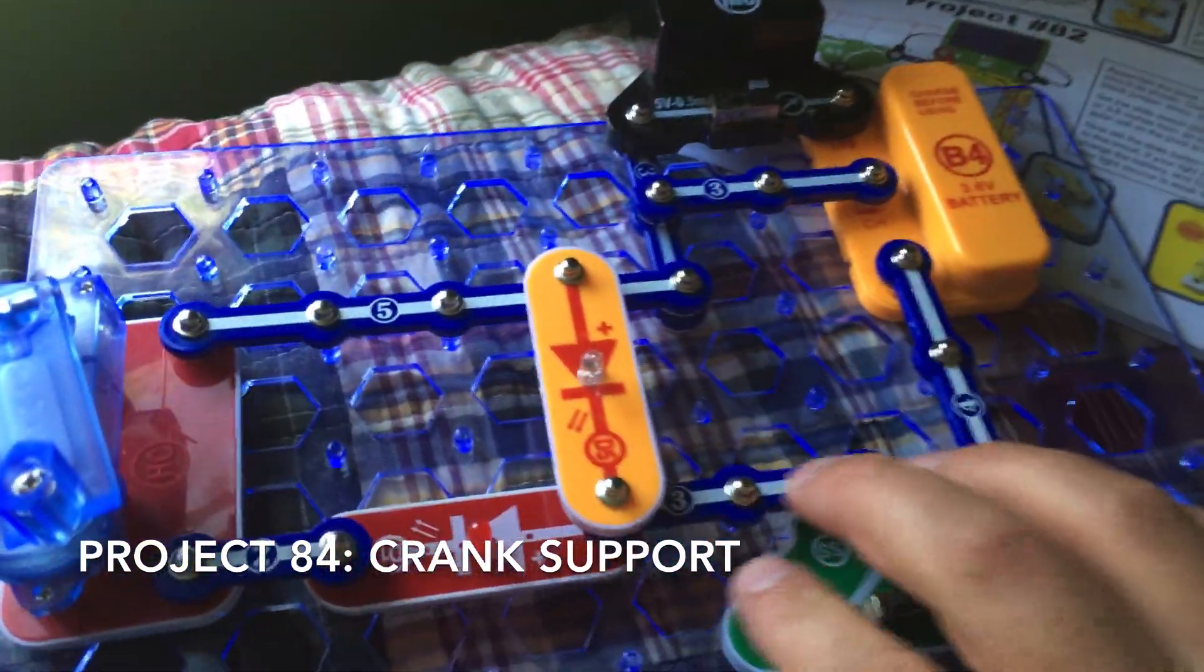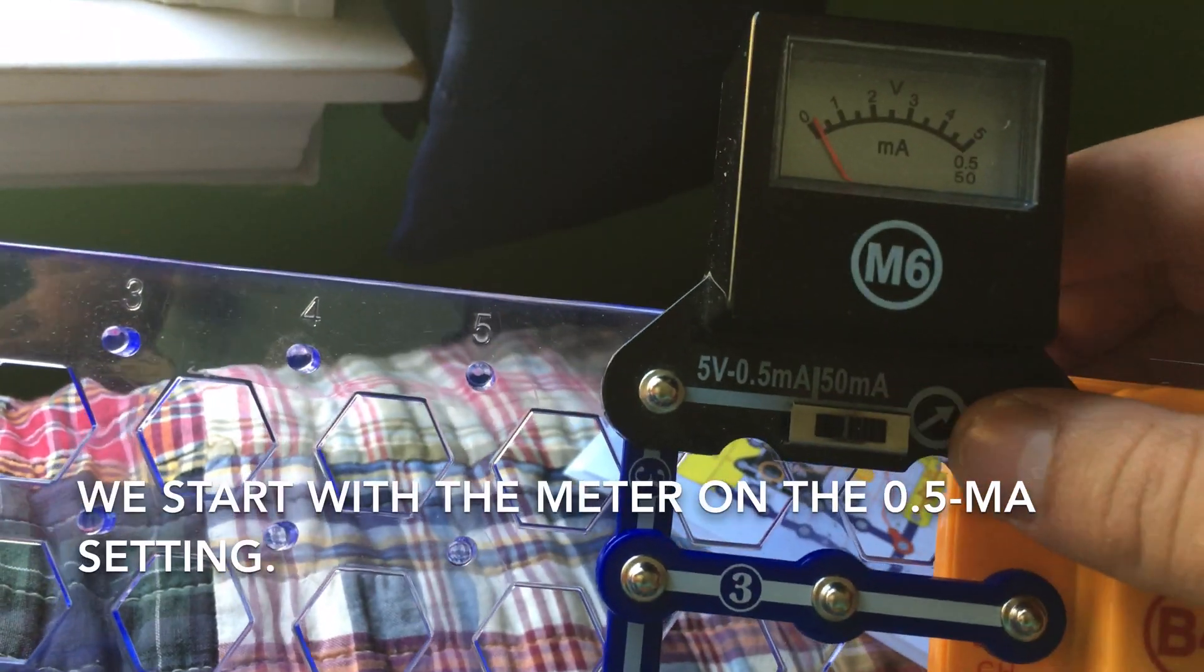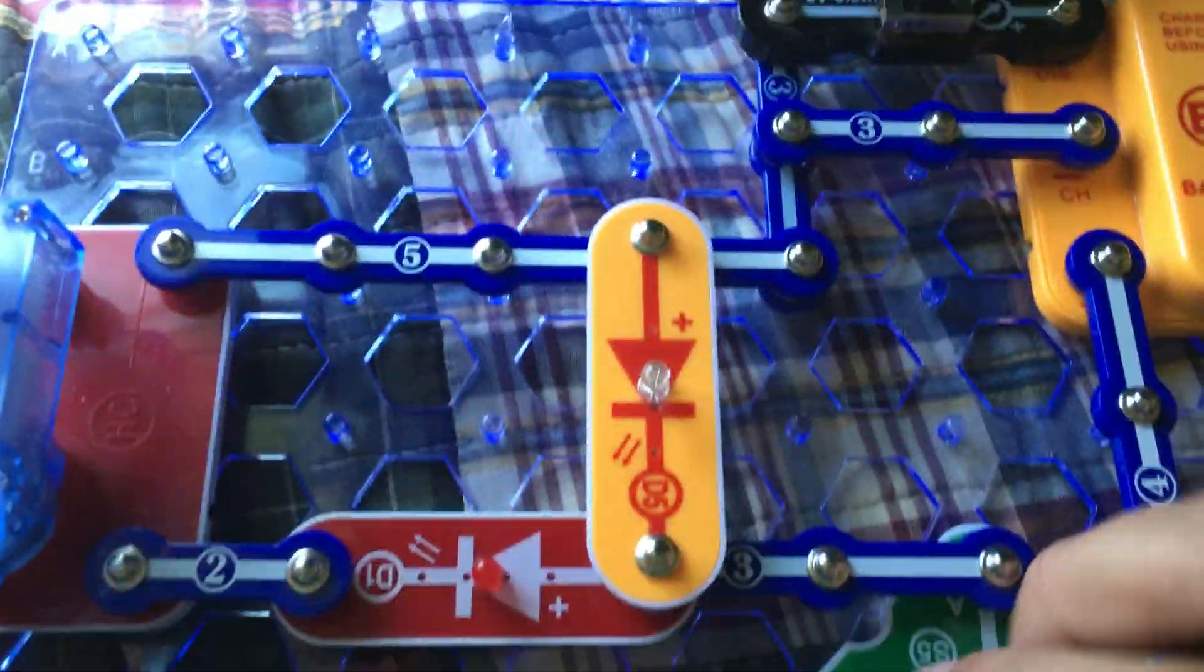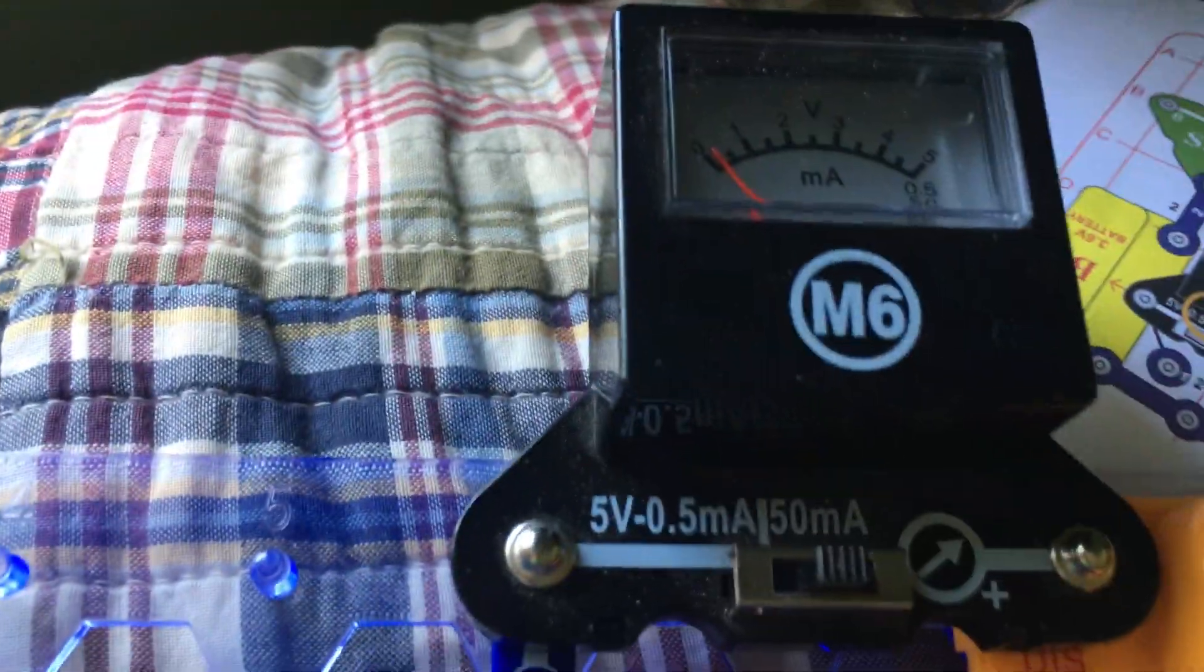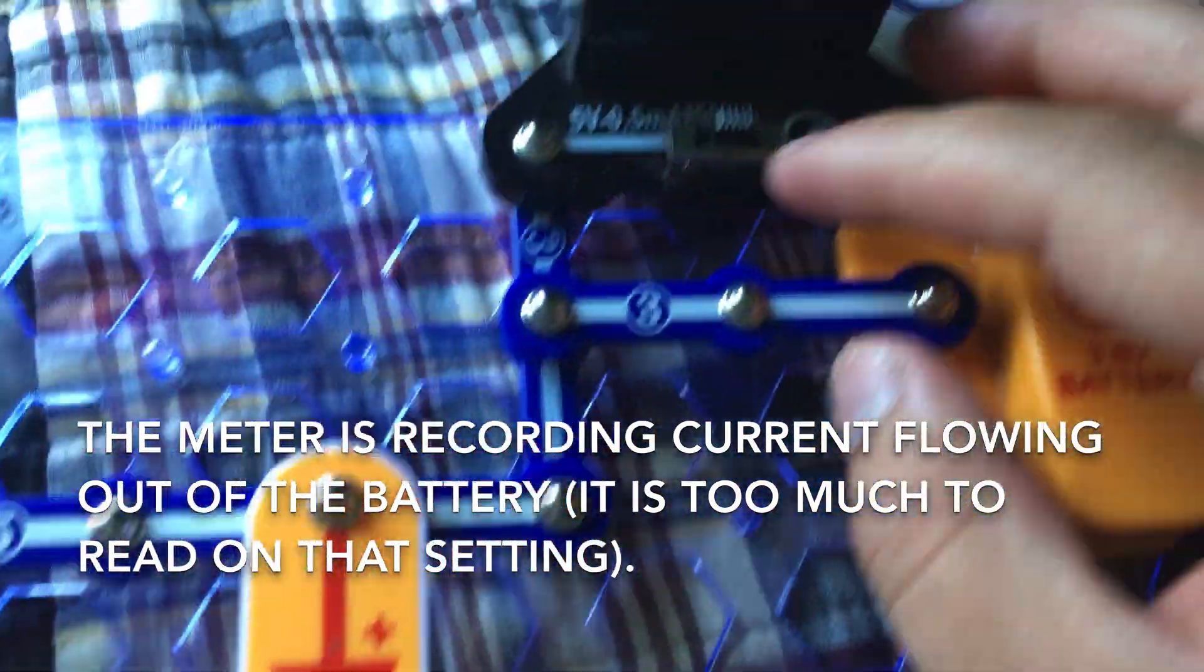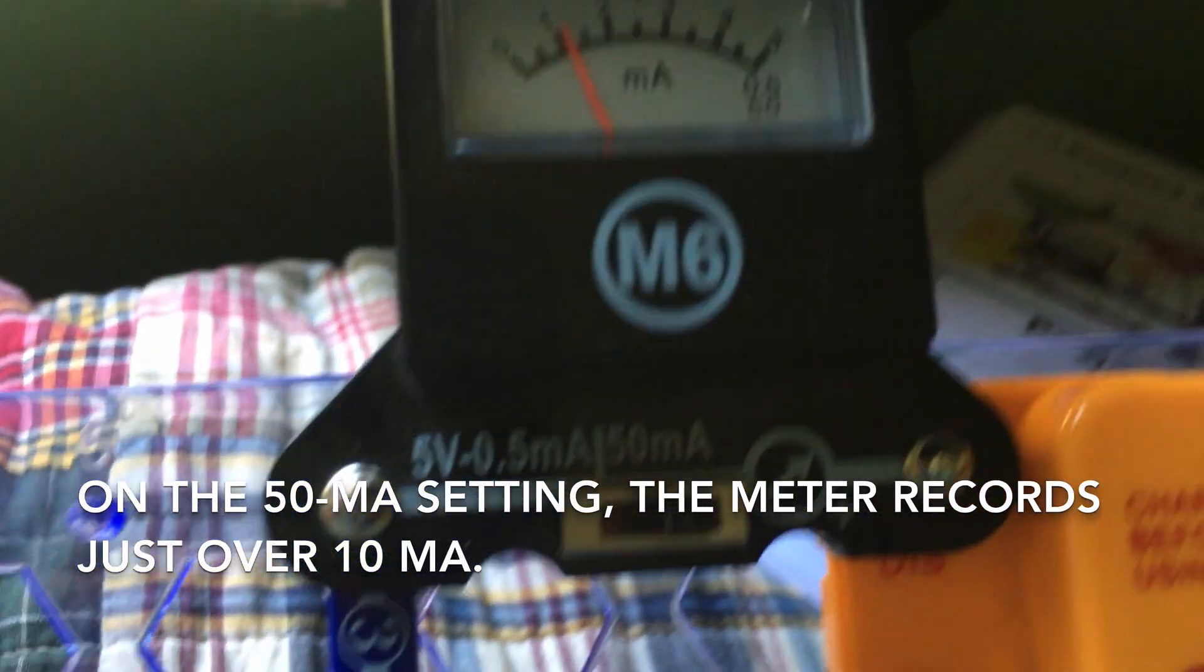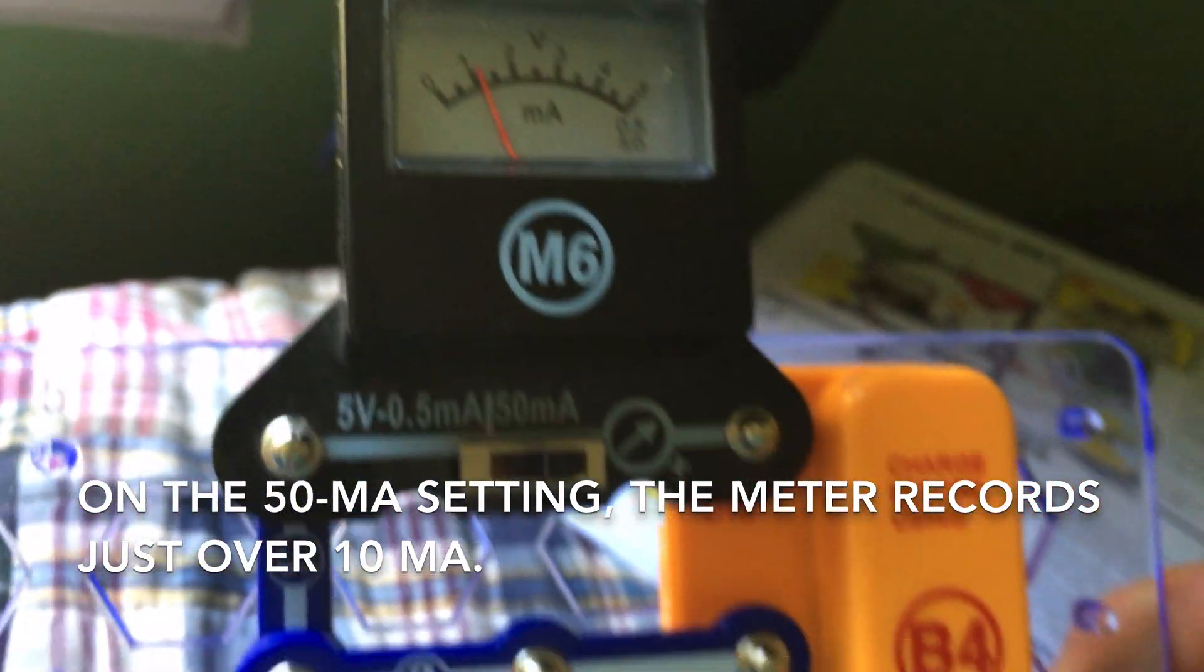We are going to move the slide switch to the B position. Now, we can have the meter set on the 0.5 milliamp setting or the 50 milliamp setting. I'm going to move the slide switch to the B position. And, the meter will show that current is flowing from the battery. And, the yellow LED comes on. On the 50 milliamp setting, it reads just over 10 milliamps.